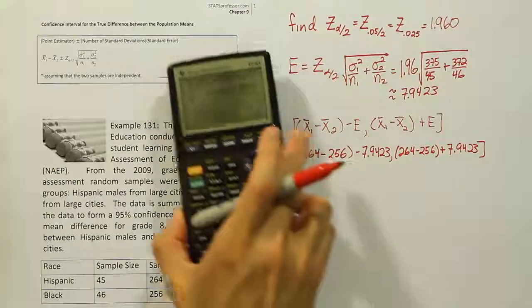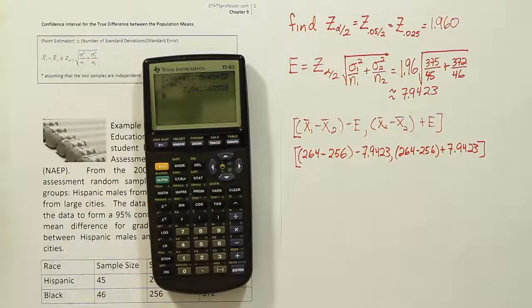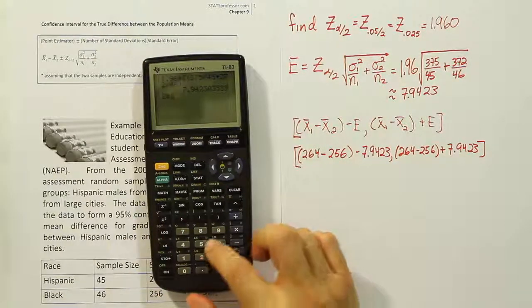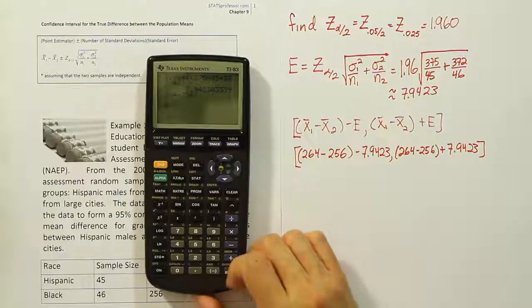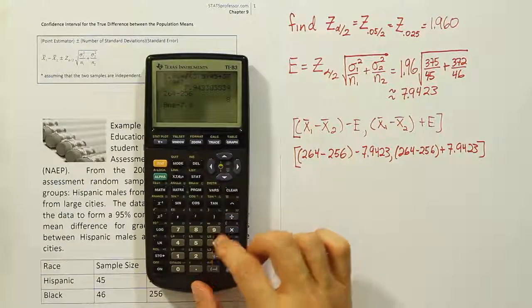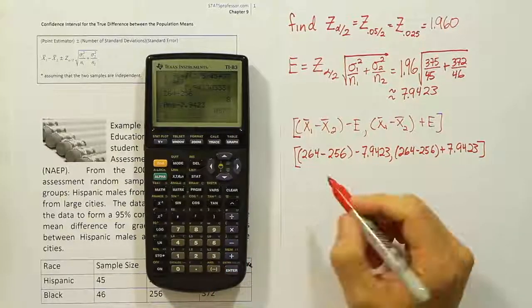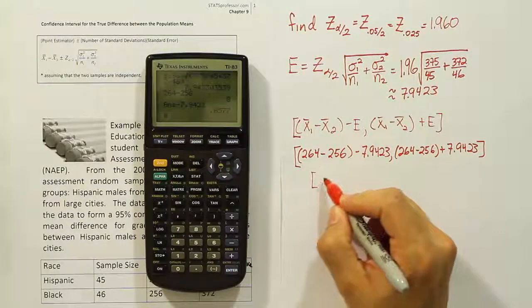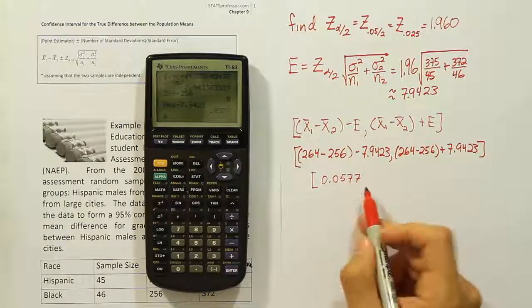So let's get that done very quickly. The difference here that we have is quite easy. It's 264 minus 256, so we're going to see a difference there of simply 8. And then we're going to subtract off 7.9423, and we'll get the first difference here for our interval of 0.0577. It's a pretty small difference there.